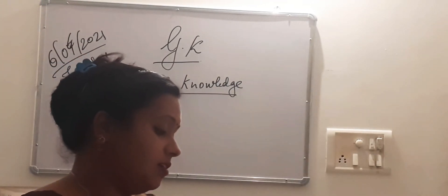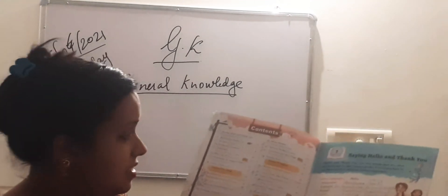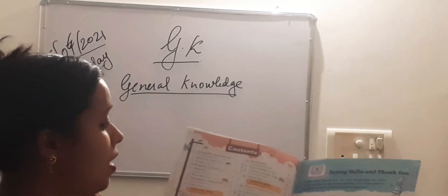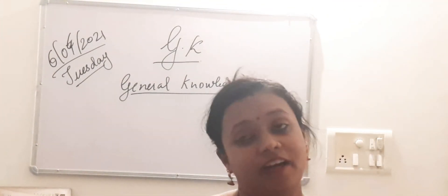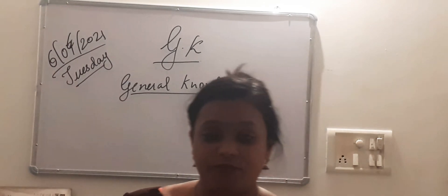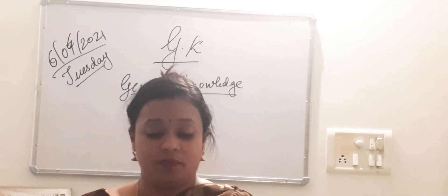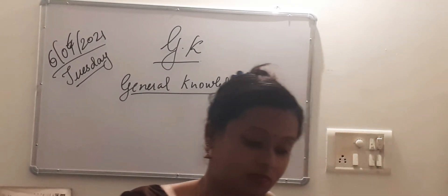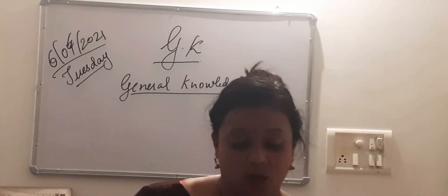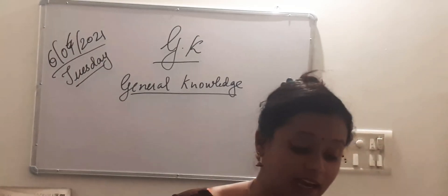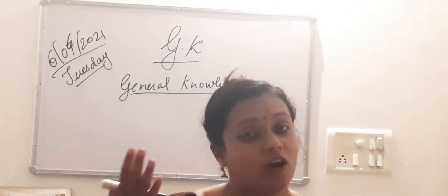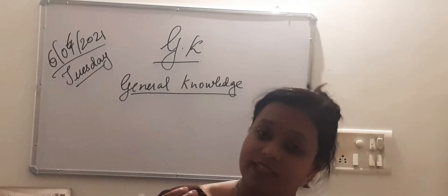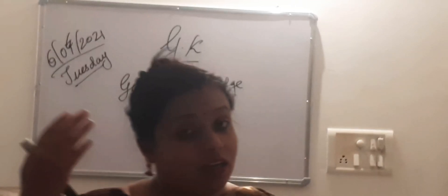There are 36 chapters in this book. The first one is about saying hello and thank you. In different languages we use different ways to say hello and thank you. For example, in Malayalam we say 'Namaskaram' for hello and 'Nandi' for thank you.